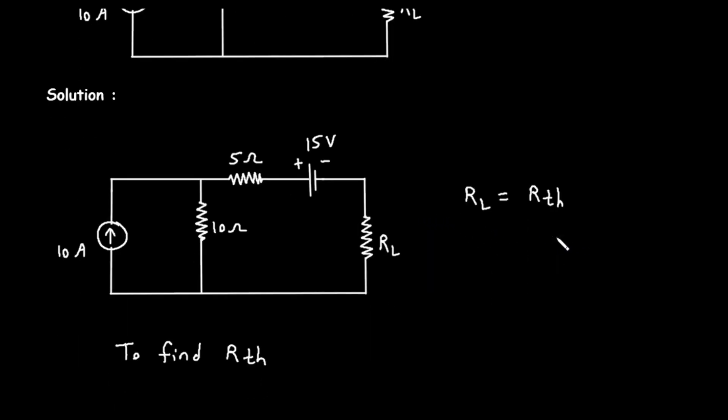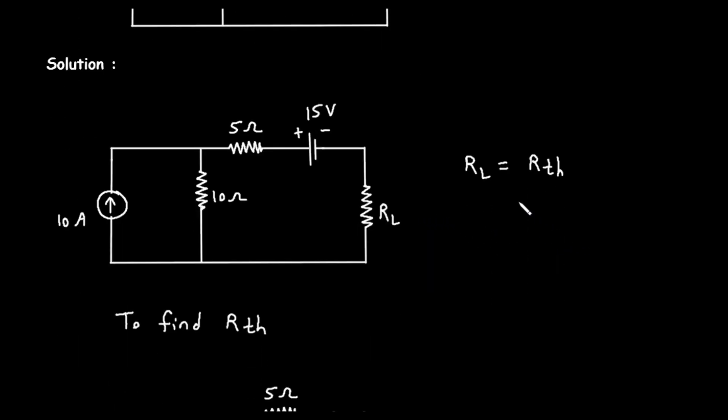So, our task is simplified. The condition for maximum power transfer is that the load resistance, R sub L, must be equal to the Thevenin resistance, R sub TH. Our entire problem now boils down to one thing: finding the Thevenin resistance of the circuit as seen from the terminals of the load resistor.